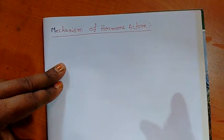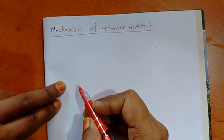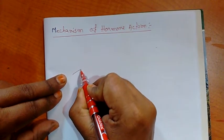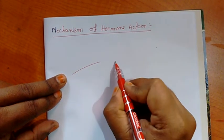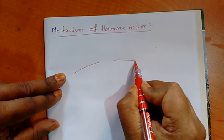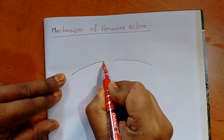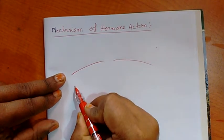Now I am going to draw the diagram first. Here this is the cell membrane of the target tissue. Cell membrane is a bilayer lipoprotein membrane, that is lipid protein membrane.